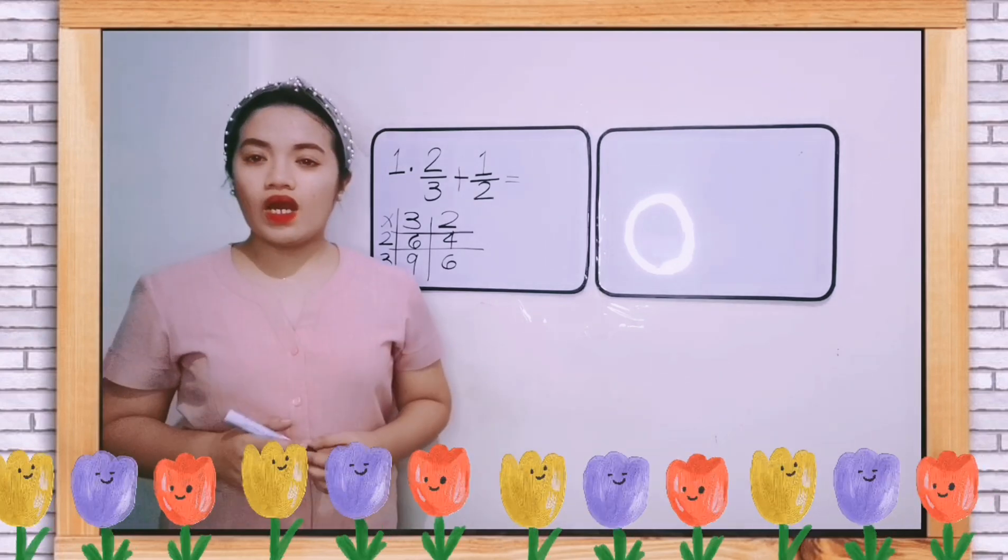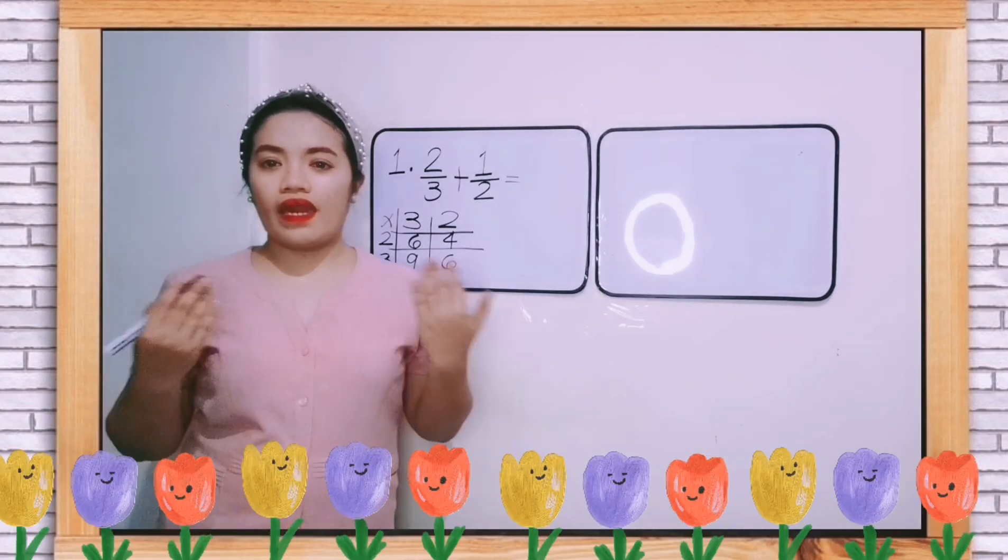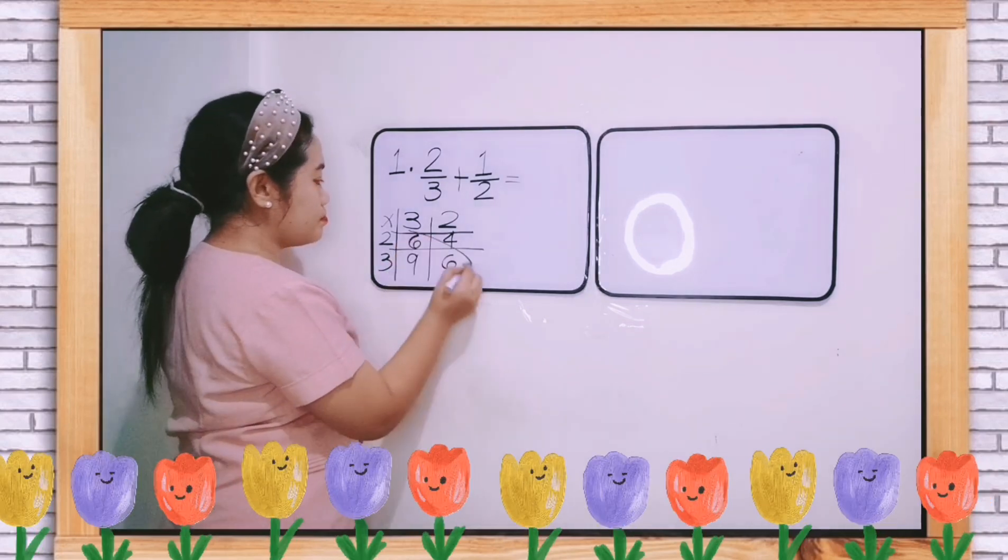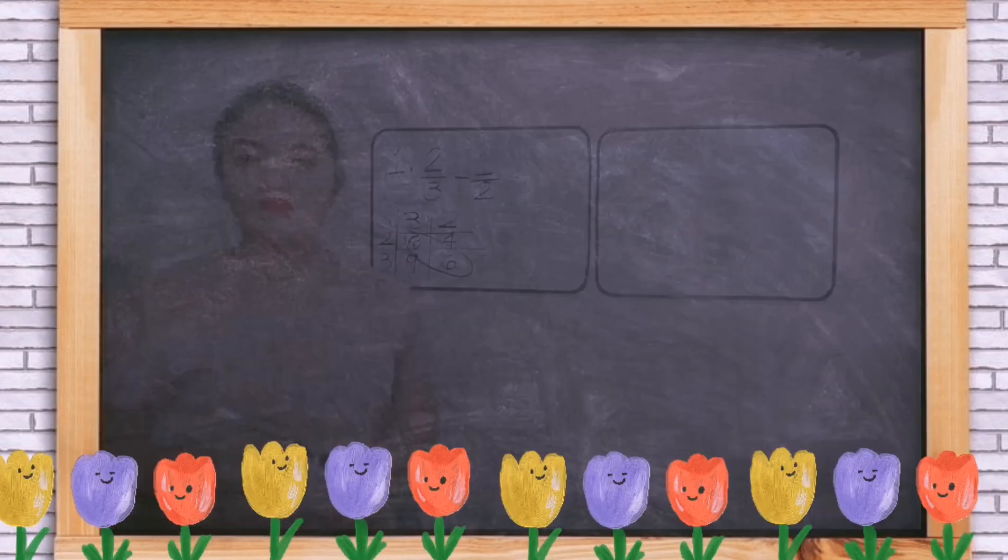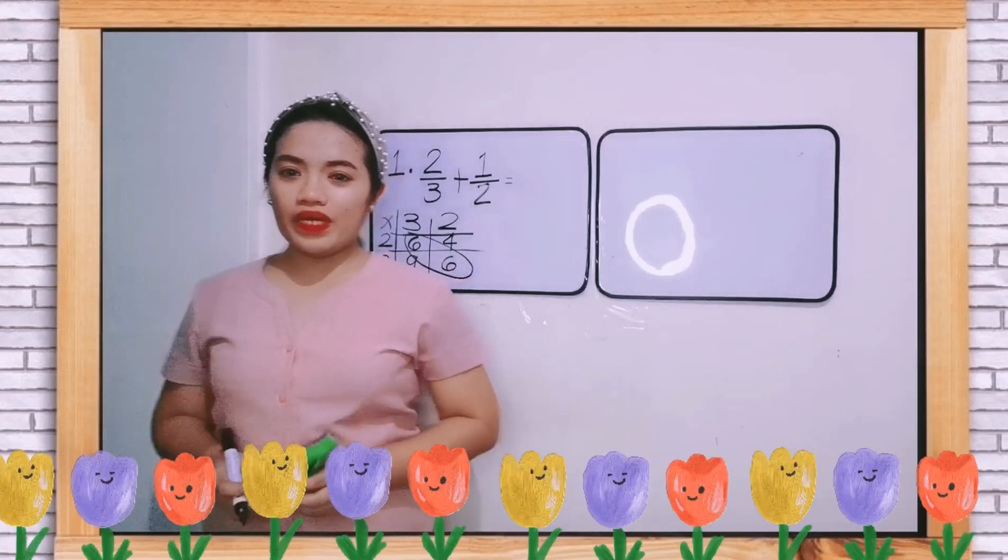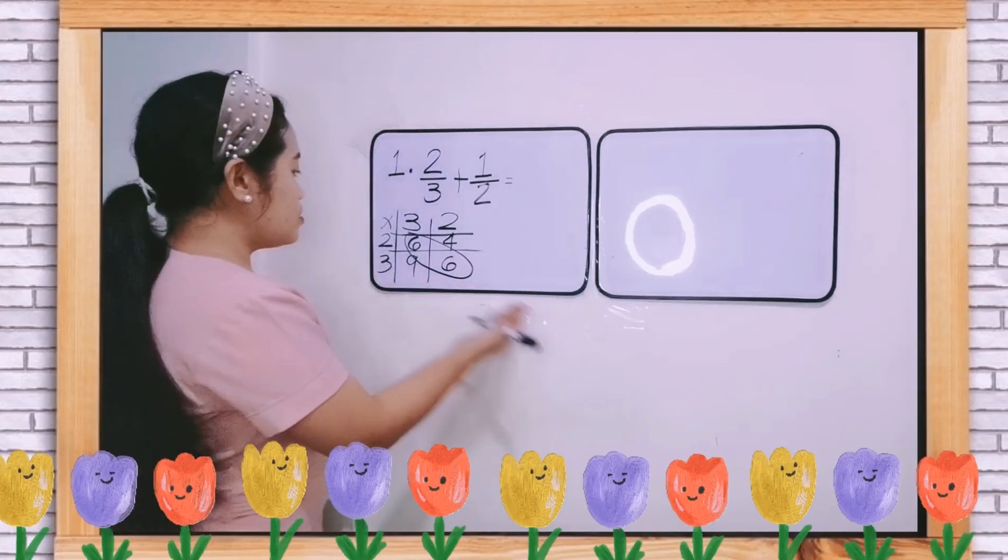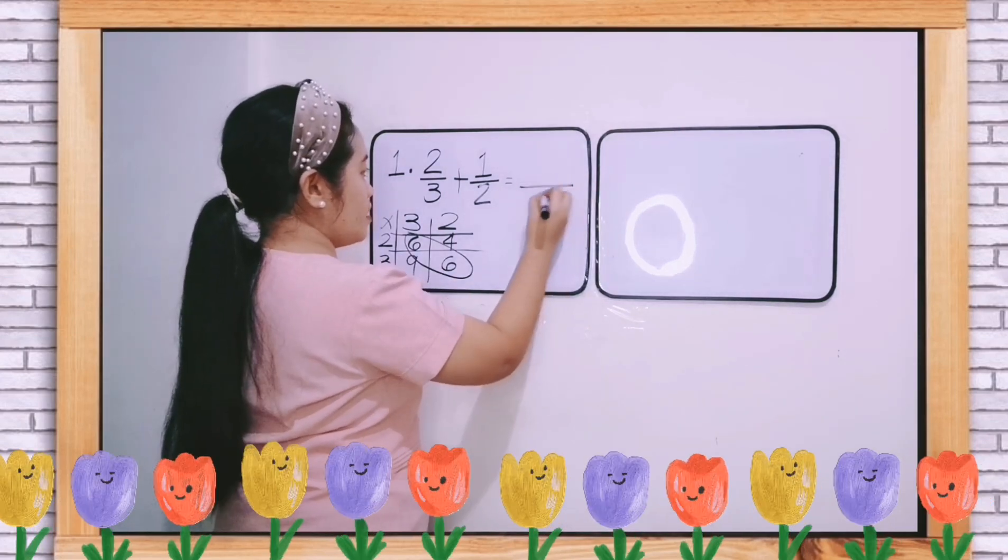As you can see, we already have the LCD or least common denominator, and that is 6. So now we can proceed in adding our given fractions. So let us write the LCD, which is 6.